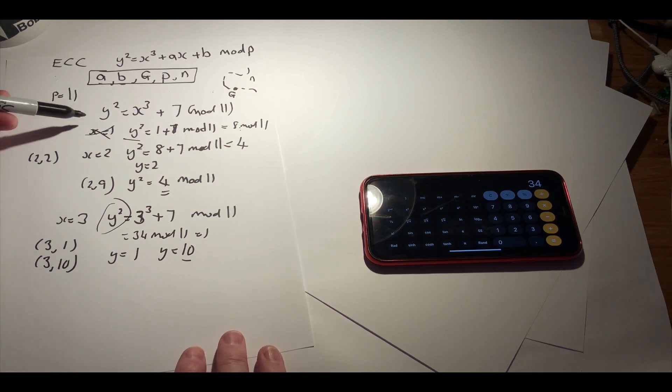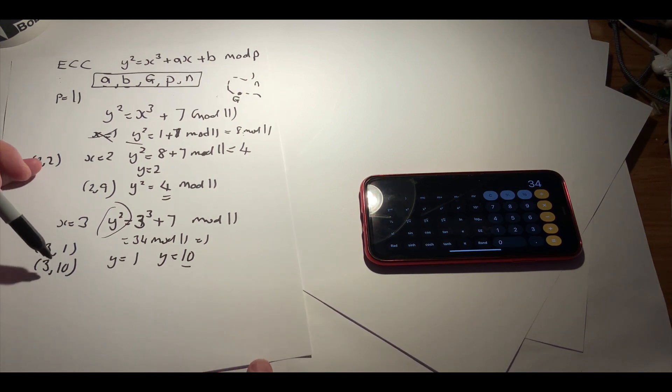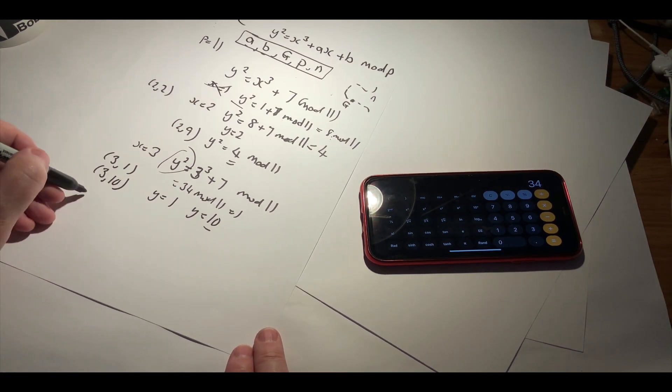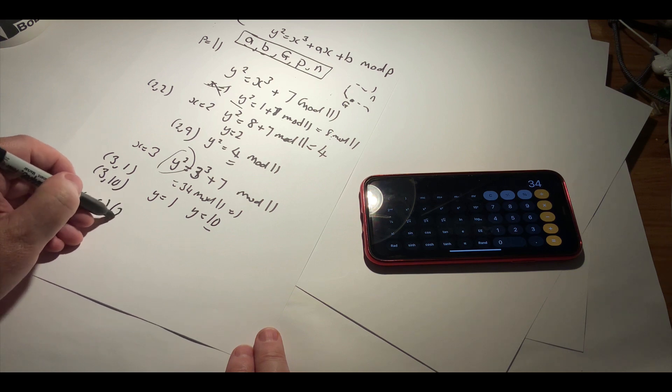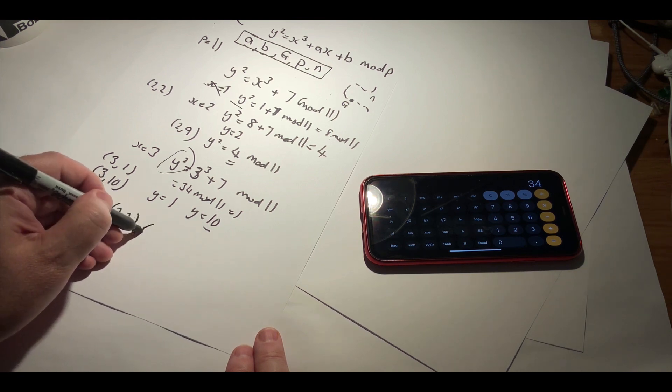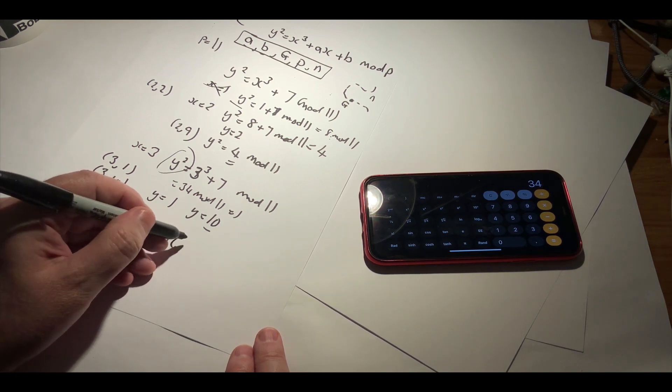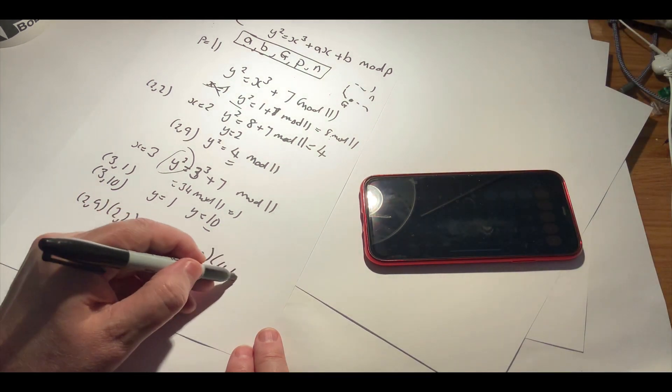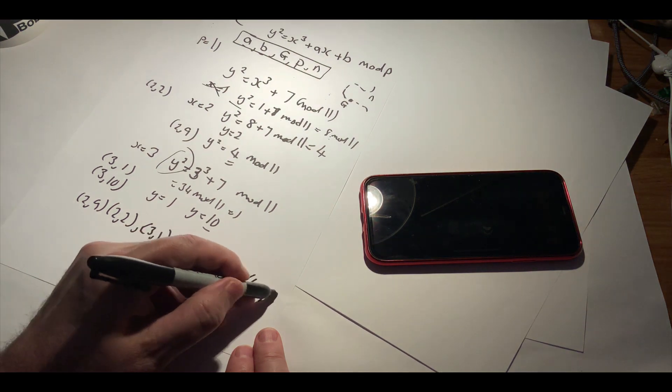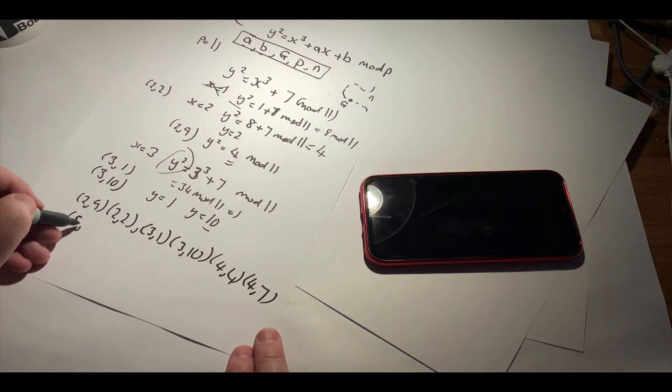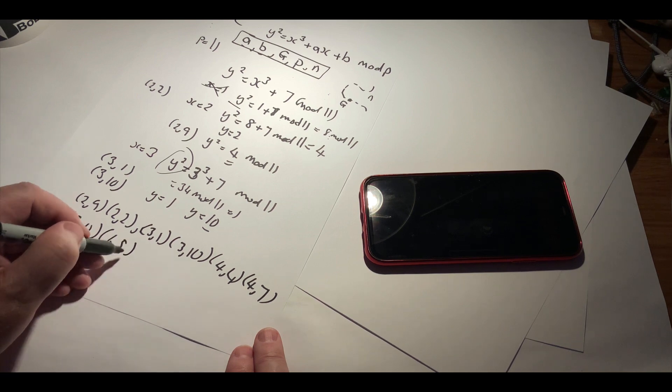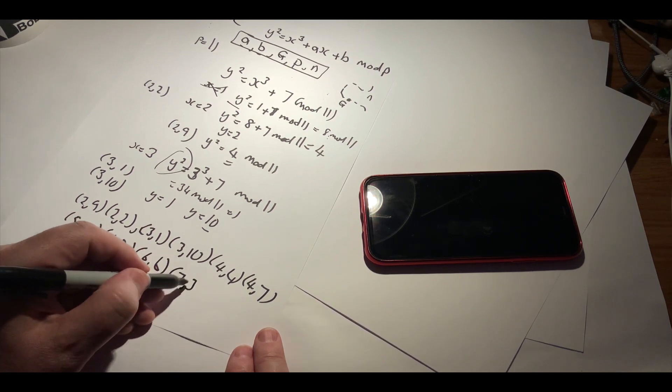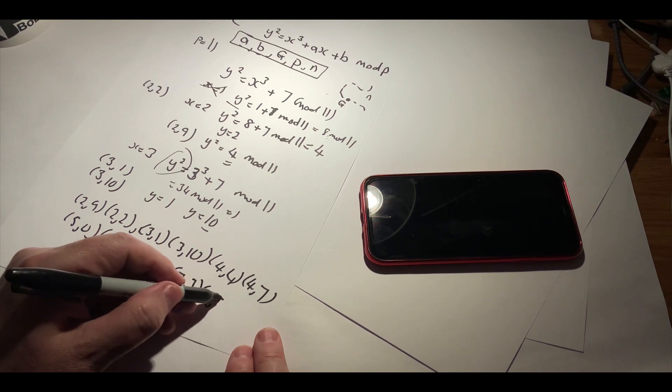And this way you can see that we end up with points on the elliptic curve. I'll just complete them all: 2, 9; 2, 2; 3, 1; 3, 10; 4, 4; 4, 7; 5, 0; 6, 5; 6, 6; 7, 3; and 7, 9.